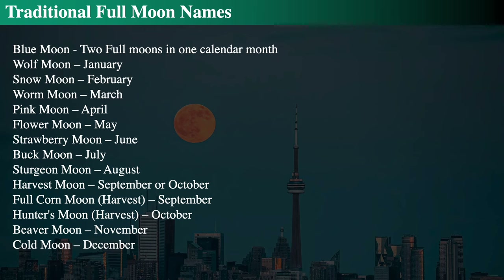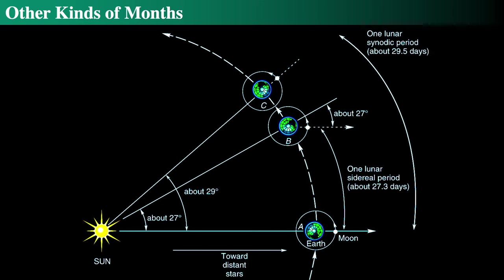There are also traditional moon names: blue moon, wolf moon, snow moon, worm moon, pink moon, flower moon, strawberry moon, buck moon, sturgeon moon, harvest moon, full corn moon, hunter's moon, beaver moon, and cold moon — all very traditional, coming from the Farmer's Almanac. A blue moon is simply two full moons in one calendar month, and it's not that rare — it happens at least once a year. So 'once in a blue moon' basically means once a year. There are also other kinds of months we're going to talk about now.